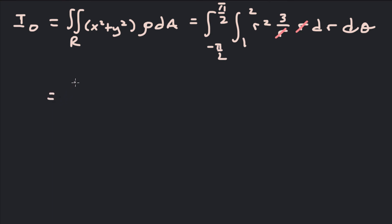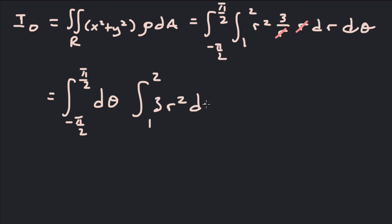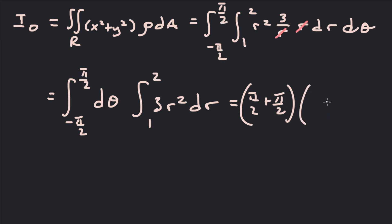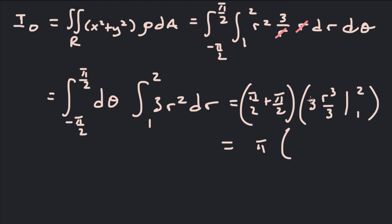We can split this up: the integral from −π/2 to π/2 of dθ, times the integral from 1 to 2 of 3r² dr. The theta integral gives π/2 + π/2 = π. Integrating 3r² gives r³, with the 3's canceling, evaluated from 1 to 2: that's 8 − 1 = 7. So this equals π times 7, giving I_origin = 7π.